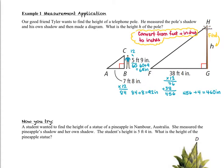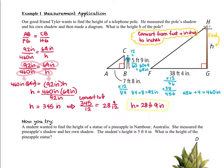Now we're ready to set up our proportions. Length AB, Tyler's shadow, is proportional to the telephone pole's shadow FG. That ratio equals CB, Tyler's height, to HG, the height of the telephone pole. Once we have that proportion set up, we plug in and solve. We find the height of the telephone pole is 345 inches, which converts back to 28 feet 9 inches.